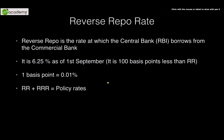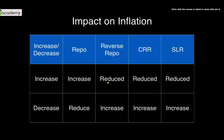So we have discussed four rates so far: CRR, SLR, repo, and reverse repo. The impact on inflation: an increase in each of these rates — repo, reverse repo, CRR, and SLR — would reduce inflation. On the other hand, if they decrease, they would increase inflation.